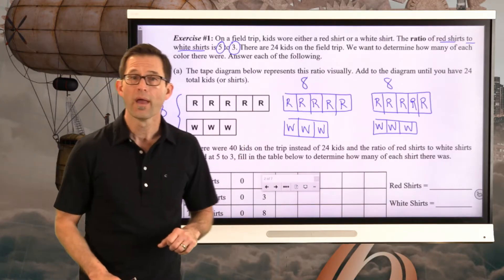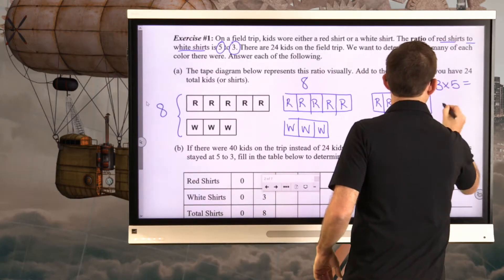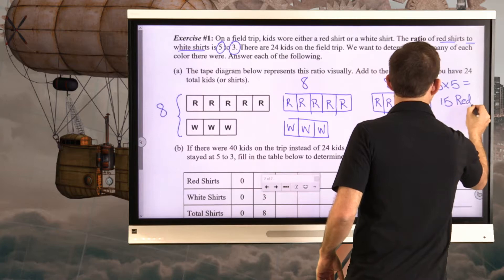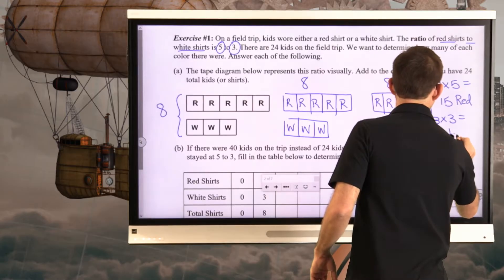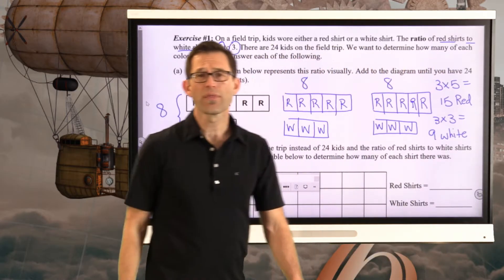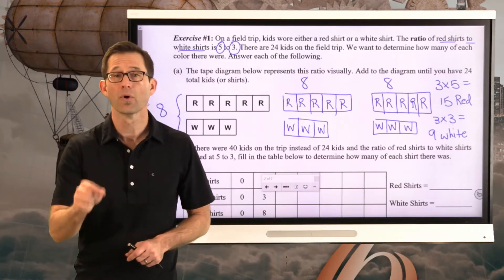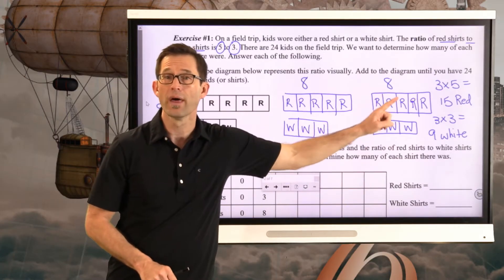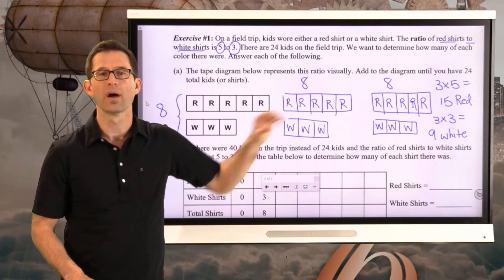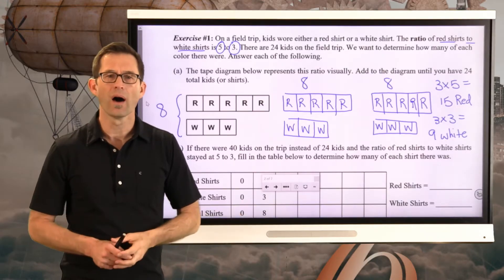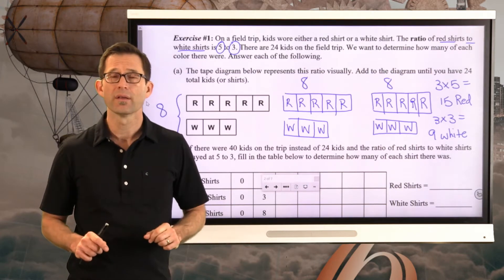Three times eight is 24. That means we have three times five, or 15 red shirts, and three times three, or nine white shirts. We took that ratio five to three and scaled it up with a scaling factor of three — multiplying both the five and the three by three, giving 15 red and nine white. With a tape diagram it works, but it can get really messy. What helps a lot is the use of a table.